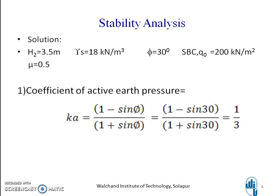Stability analysis. H2 is the height of the earth fill, which is 3.5 meters as given. The density of soil gamma is 18 kN/m³, angle of internal friction is 30 degrees, SBC (Q naught) is 200 kN/m², and mu is 0.5. First, find out the coefficient of active earth pressure Ka, given by (1 − sin φ) / (1 + sin φ), which works out to be 1/3.